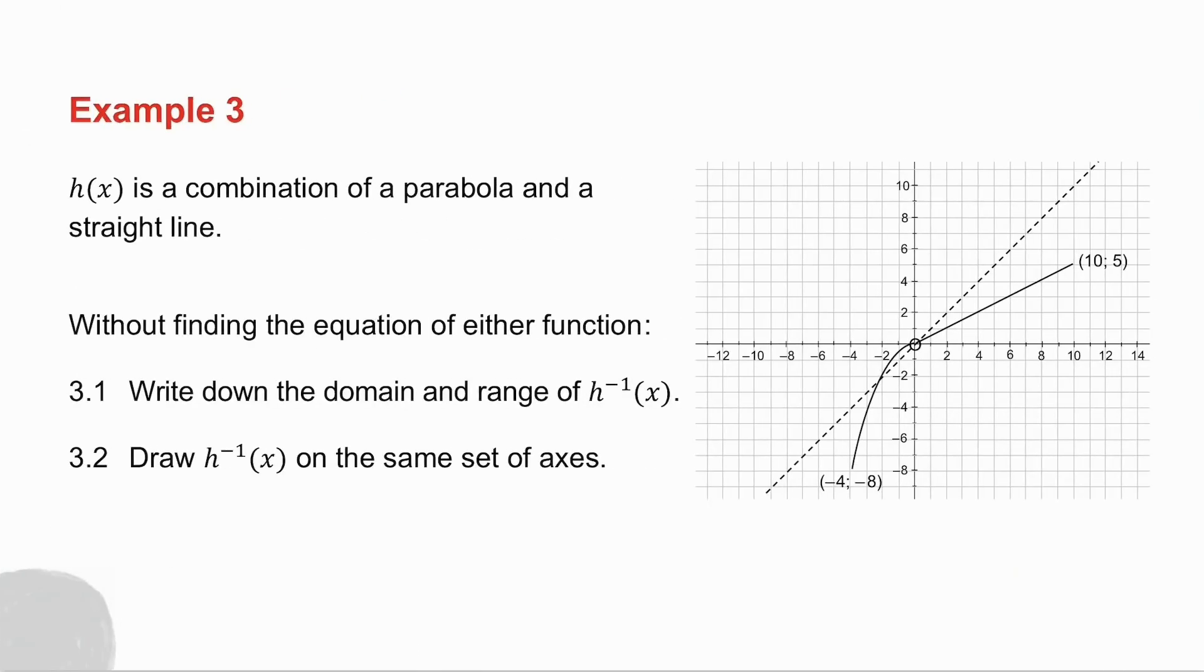The last example we're going to do gives you a combination of a parabola starting at the point minus four minus eight and a straight line ending at the point ten five. And I'll ask you two questions. I want you to pause the video and I want you to try these two questions and then we'll do them together.